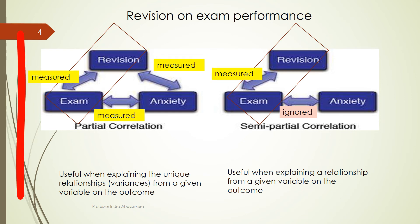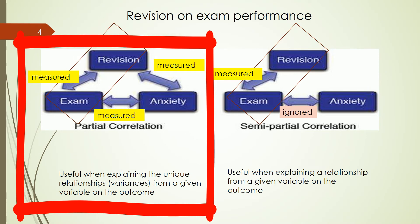In partial correlation, when we want to examine the effect of revision time on exam performance, we measure that effect but at the same time we also look at the influence exercised by the third variable — anxiety — on the revision variable (the predictor) and also on the outcome variable (exam performance). This allows us to identify both the unique variance contribution of revision on exam performance and the common variance.